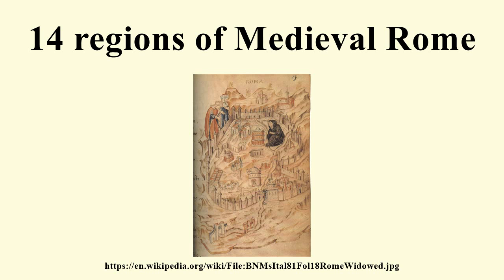After the destructive Gothic Wars of the 6th century, the city of Rome had become virtually depopulated. When the city began to recover it was inhabited in new parts and whole districts were in ruins. Consequently, the Augustan regions now had no relationship to the administration of the city, but they continued to be used as a means for identifying property. As Rome slowly recovered, it became necessary to organize the city for the purpose of defense, and one theory contends that this was the origin of the 12 medieval regions.